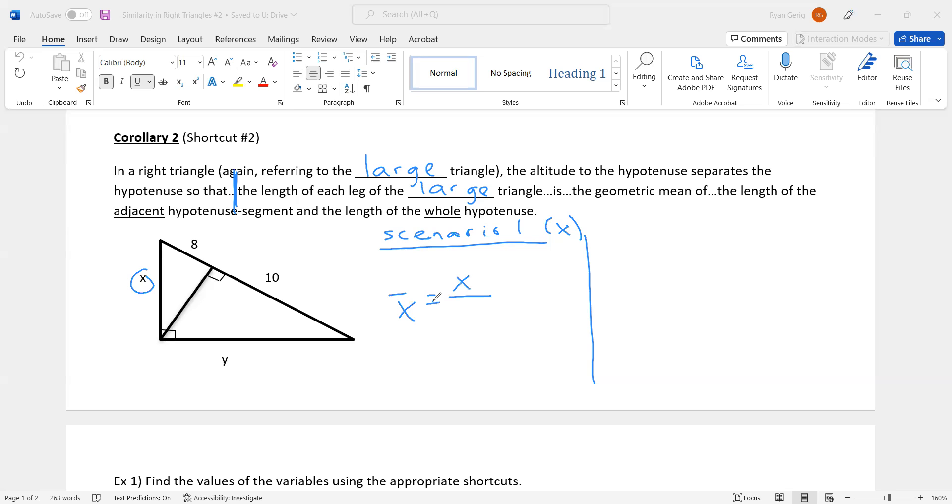Of what? That's the hard part. People get the geometric mean placed okay. It's the, what is it, the geometric mean of? The length of the adjacent hypotenuse segment. So adjacent to X, which segment is adjacent to X? In this case, it's 8. Whole hypotenuse. Whole hypotenuse is 8 plus 10, or 18. So it's the geometric mean of 8 and 18.